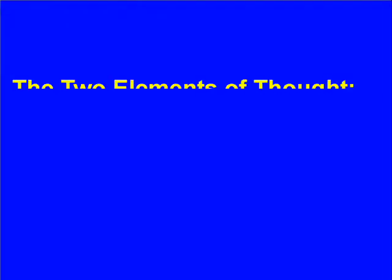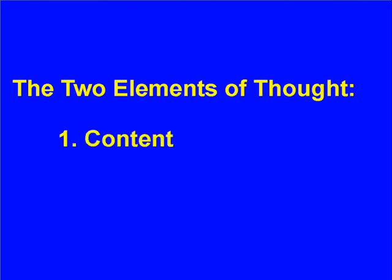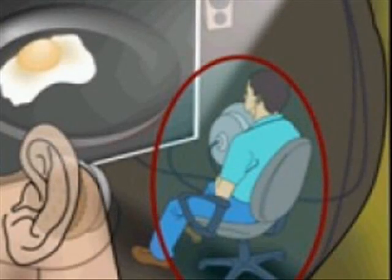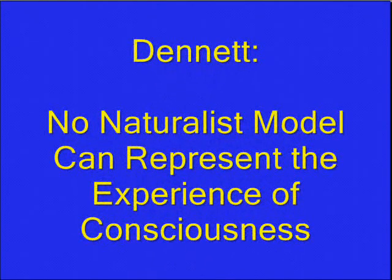Still, the Cartesian theater captures the two basic elements revealed by subjective experience: we have content, and we have awareness of content. Any model of mind must represent both. But the naturalist model can only explain content and the processing of content. Naturalists haven't the faintest idea of how to represent awareness other than the homunculus, which leads to an infinite regress. In a long, reasoned, and careful analysis, Dennett shows that no naturalist model can represent the elements present in experience.